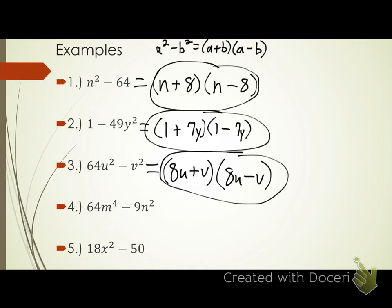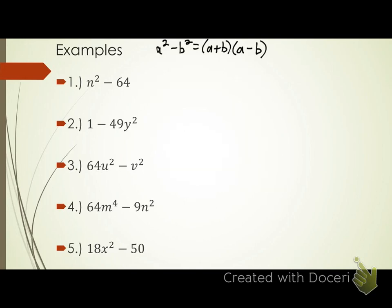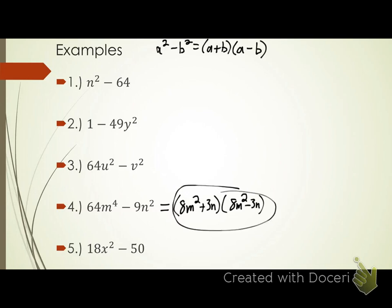Y'all try four and five on your own. Number four: is it a subtraction problem? Yes. Can I take the square root of my first term? Yep. Can I take the square root of my second term? Yep. What would the square root of 64m to the fourth be? 8m squared. Remember, to take the square root of a variable with an exponent, divide by the index of your radical. Four divided by two gives me two, that's how I got m squared. What would the square root of 9n squared give me? 3n. One's a plus, one's a minus. There's your factored form for four.